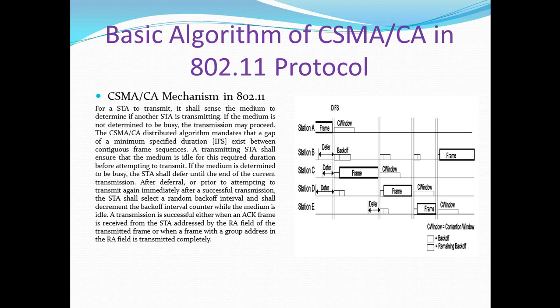Now, how does CSMA/CA work in the 802.11 protocol? For a station to transmit, it shall sense the medium to determine if another station is transmitting. If the medium is not determined to be busy, the transmission may proceed. The CSMA/CA distributed algorithm mandates that a gap of minimum specified duration exists between contiguous frame sequences.